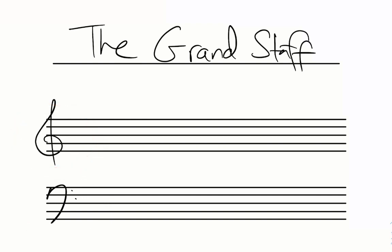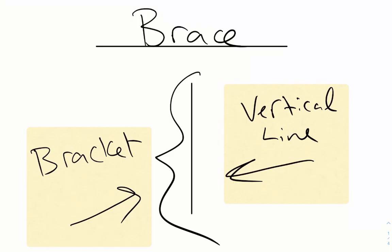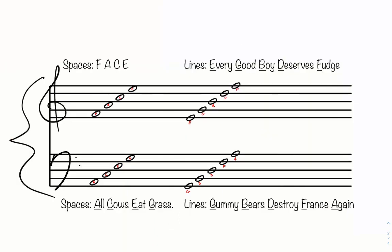To make the grand staff, all you need is one staff with the treble clef, one staff with the bass clef, and then you need to connect them using a brace. This is the brace. It's a vertical line with a bracket on the side. Once you connect the two staffs with the brace to create the grand staff, everything else stays the same.